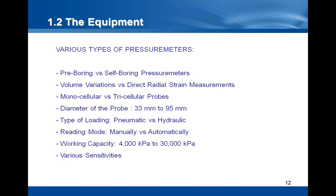The diameter of the probe can also vary a lot depending on the model of pressure meter. From 33 mm for pavement mini pressure meters, to 95 mm for pressure meters designed for rock. The standard size in Europe is 60 mm, whereas the 74 mm probe is more common in North America. The type of loading can either be pneumatic or hydraulic. The reading mode can be manual or automatic depending on the equipment. The working capacity and sensitivity can also vary, and will increase with pressure meters designed for use in stiff soils or in soft rock. The capacity of a soil pressure meter is normally around 10,000 kPa.